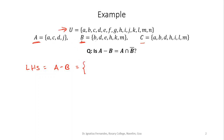By definition, A minus B is the collection of all elements of A which are not in B. A is in A but not in B, so it comes in A minus B. C is also not in B, so C comes in A minus B. D is present in B so it won't appear. J is also not in B. So A, C, J are the elements of A which are not in B — this is our left hand side.